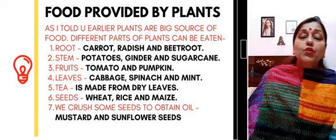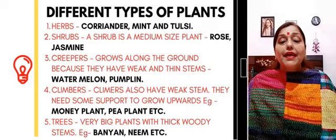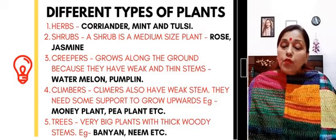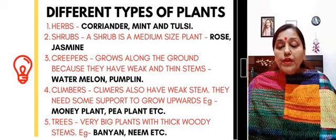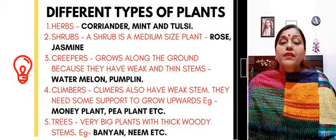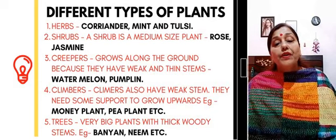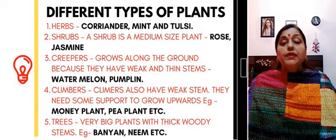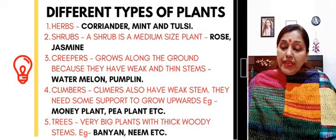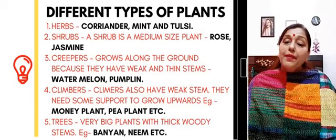Now let me talk about the different kinds of plants and how many types of plants there are. First of all, we will start with herbs. Then, what are shrubs? A shrub is a medium-sized plant — for example, rose and jasmine. Then come creepers. Creepers grow along the ground because they have weak and thin stems — for example, watermelon and pumpkin.